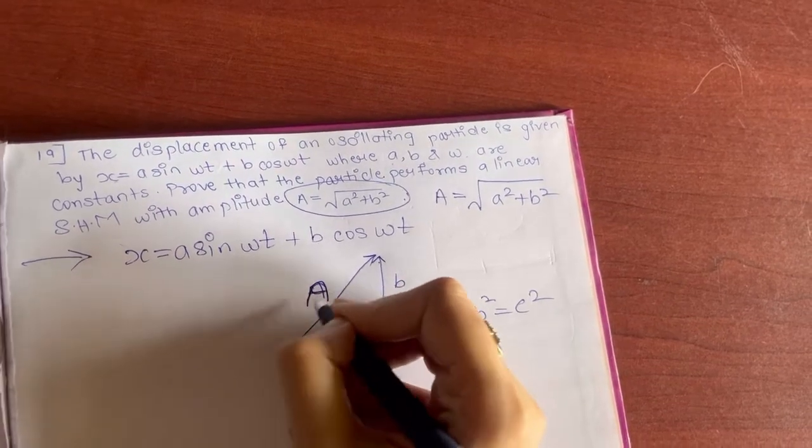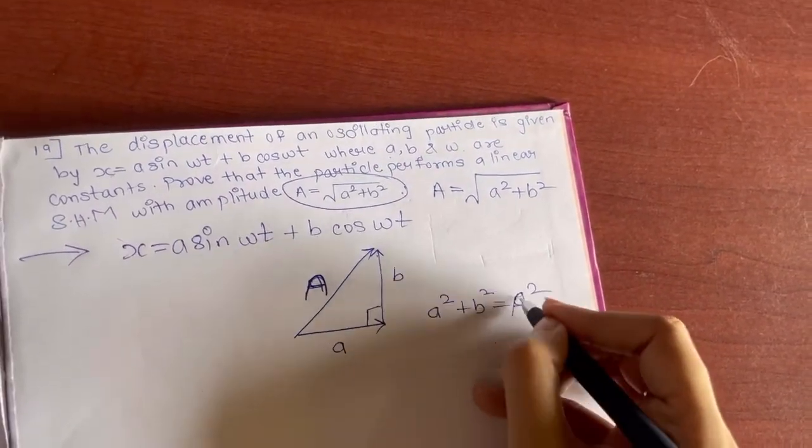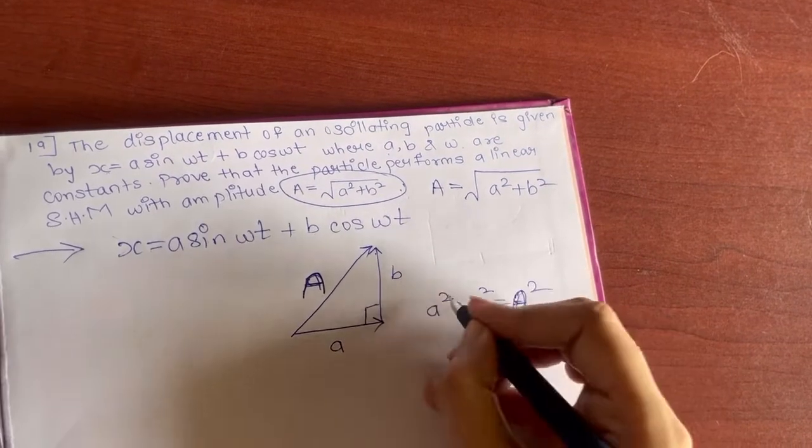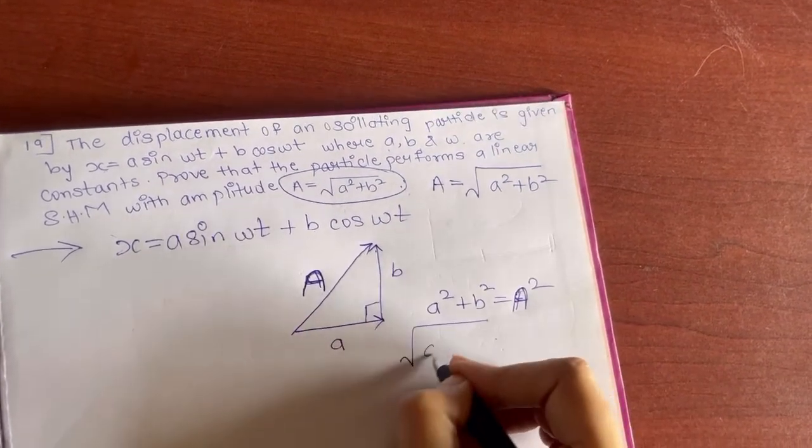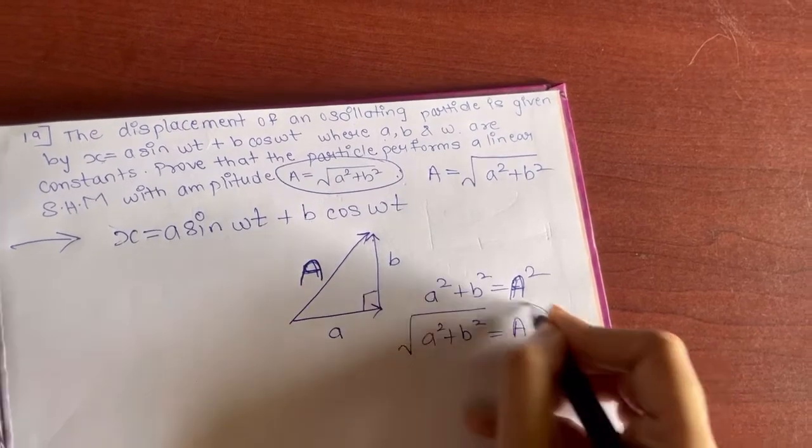Now, why I am doing this, I will explain you afterwards. So here I will write capital A. Once you take the square root on this side, this becomes √(a² + b²), that is equal to capital A.